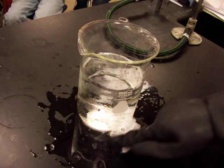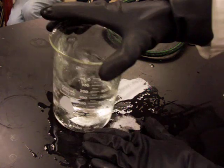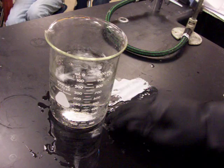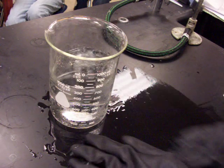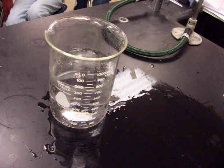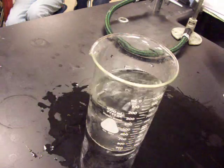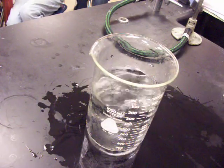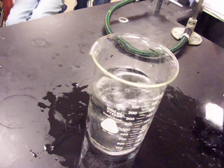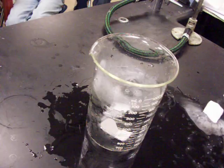Here I have a beaker of just plain water. I do have some frozen ice and liquid water on the tabletop from when I poured it earlier, but I have a beaker of liquid water and into it we're going to toss a small piece of dry ice.